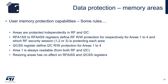Areas are protected independently in RF and I2C. The RF-A registers from 1 to 4 set the read-write protection for areas 1 to 4. The I2C-SS registers define read-write protection for areas 1 to 4. Area 1 is always readable by both I2C and RF, and resizing an area has no effect on RF-A and I2C-SS registers.